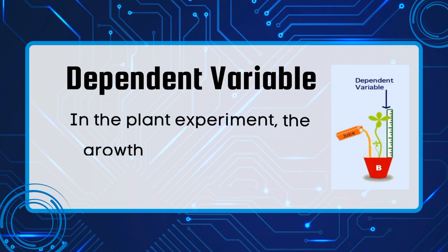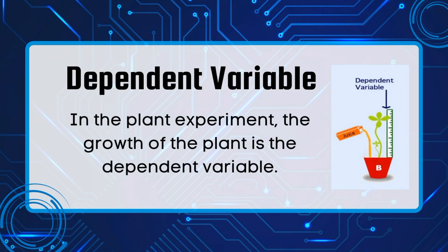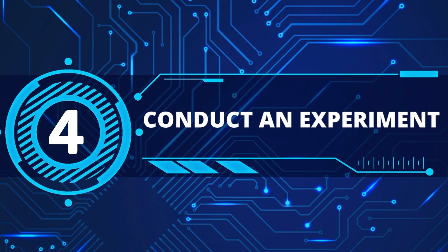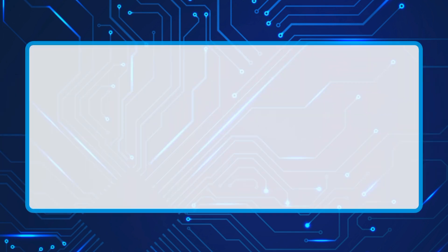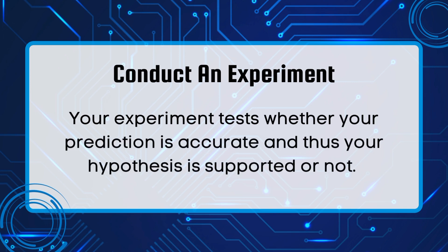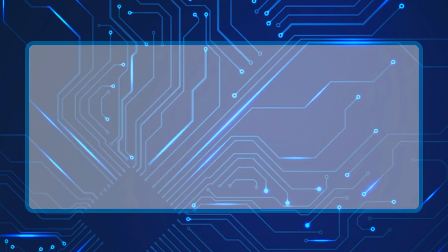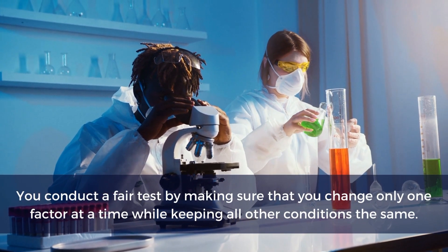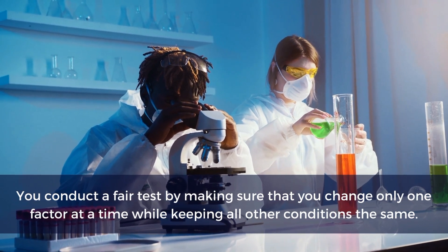In the plant experiment, the growth of the plant is the dependent variable. In an if-and-then experiment, the response to a change refers to the dependent variable, and its value depends on the status of the independent variable. Fourth, test your hypothesis by conducting an experiment. Your experiment tests whether your prediction is accurate and thus whether your hypothesis is supported or not. You conduct a fair test by making sure that you change only one factor at a time while keeping all other conditions the same.